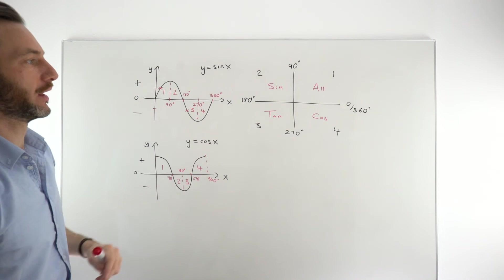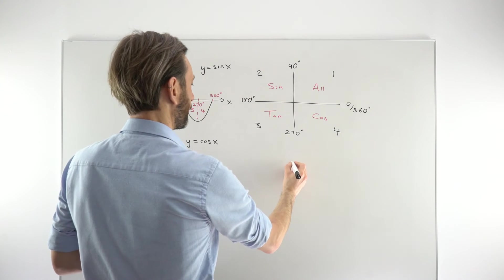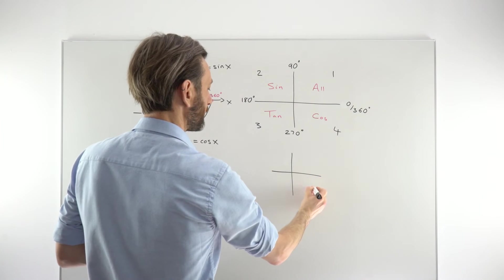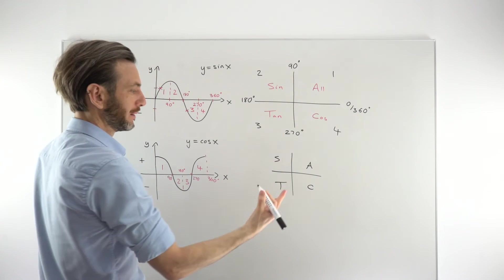When you draw the CAST diagram, we tend to draw it fairly quickly. So once you get comfortable with the CAST diagram, you'll probably end up just going like this. So C, A, S, T. You might even start to drop the labels.